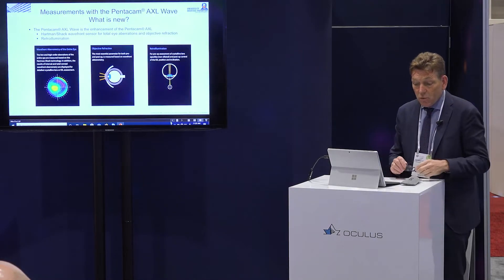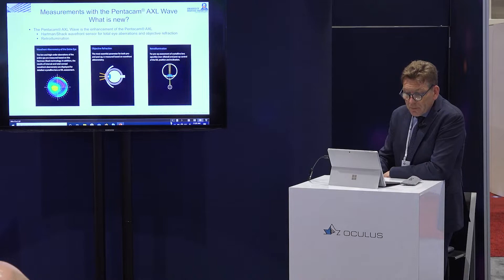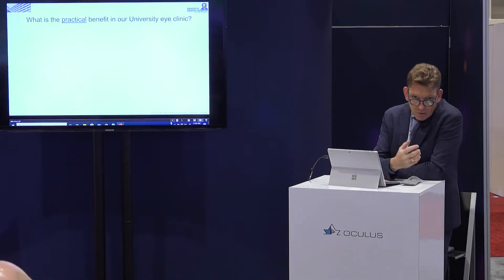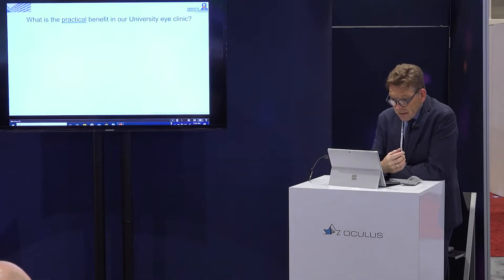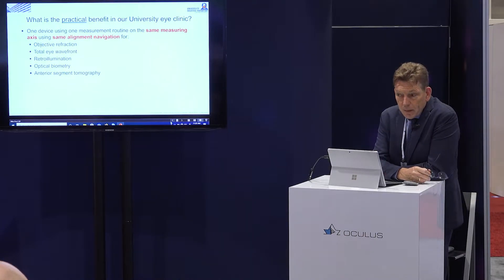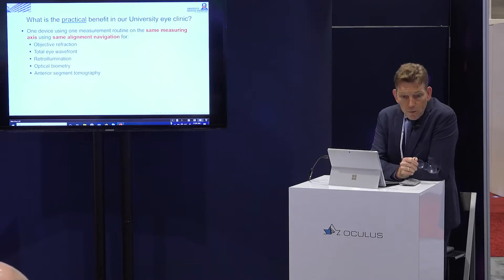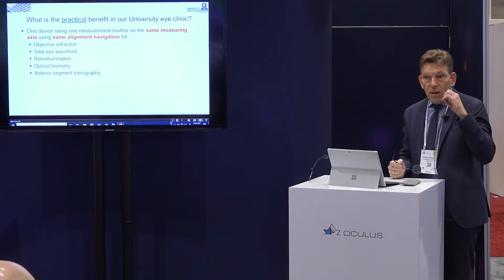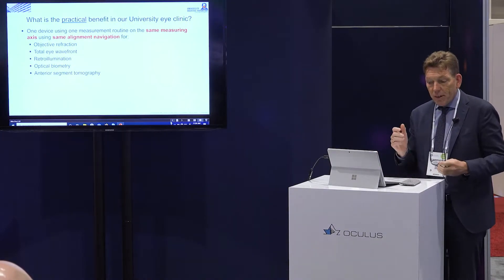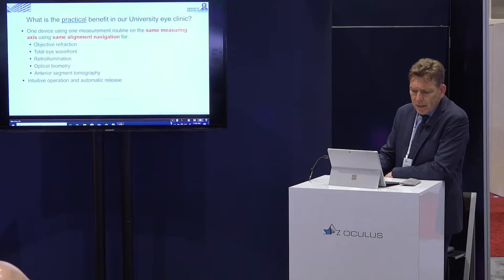The AXL Wave adds three new features: wavefront aberrations, objective refraction, and retro illumination. It incorporates a Hartmann-Shack sensor. In our clinic's patient workup, I ask staff to take an AXL Wave measurement because it provides five information sets from one device, taken by one person in one shot: objective refraction, total wavefront, retro illumination, optical biometry, and anterior segment tomography.